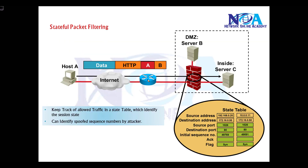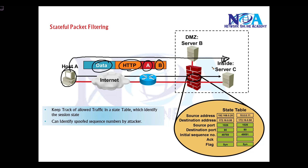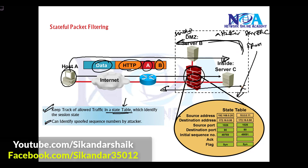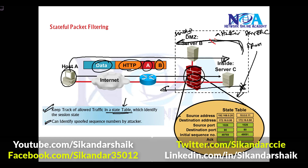To summarize: when a user initiates a request, the session details — source address, destination address, data, protocol, and other information — are written into the session table. When traffic returns, it must match those session entries. Firewalls have the capability to track all allowed traffic in the state table, which identifies the session state. This also helps detect spoofing: if an attacker tries to spoof a valid server and initiate traffic, it will not match the state table database and will automatically be dropped.